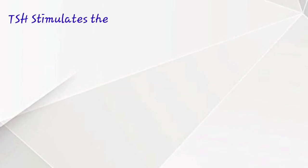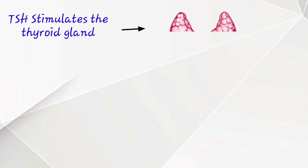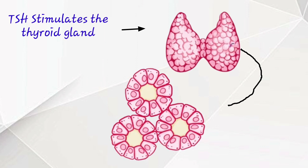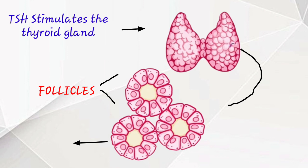TSH stimulates the thyroid gland. The thyroid gland contains thousands of follicles with numerous follicular cells.